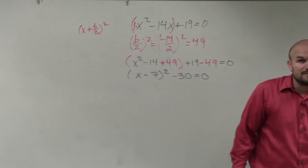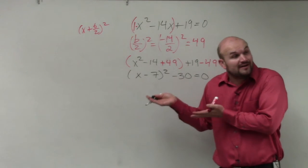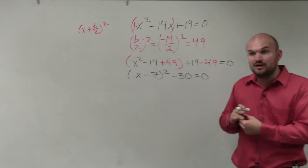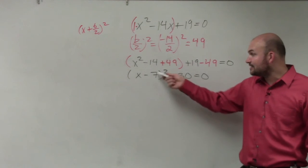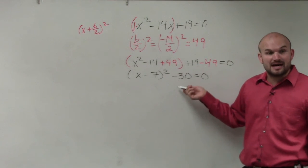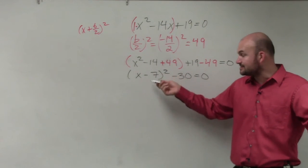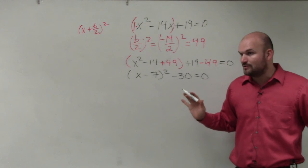So now that we have it in vertex form, right, if we were going to graph the quadratic, if you remember, especially for those of you that are working on that unit 2 review, if you're going to graph the quadratic, the vertex in this case would be 7 comma negative 30. And then you could graph the quadratic, right? Axis of symmetry would be x equals 7. But we're not graphing the quadratic.